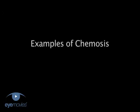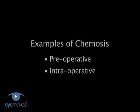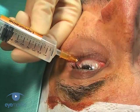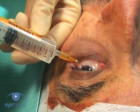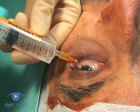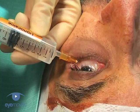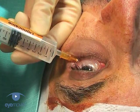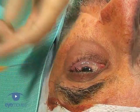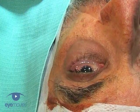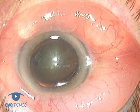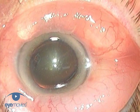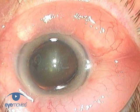Chemosis can occur either preoperatively or intraoperatively. It usually occurs after giving the local block, when the anaesthetic refluxes into the subconjunctival space. This can happen with either subtenons or peribulbar blocks. When it does occur, the fluid tracks around the cornea until a characteristic doughnut configuration is formed.